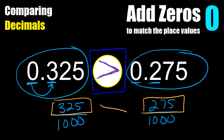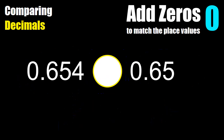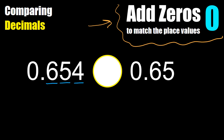You know that three hundred and twenty-five is greater than two hundred and seventy-five. Now let's look at these two decimals: six hundred and fifty-four thousandths and sixty-five hundredths. To compare them, we use the hint: add zeros to match the place value. Our longest decimal goes to the thousandths place, so for sixty-five hundredths we add a zero in the thousandths place.